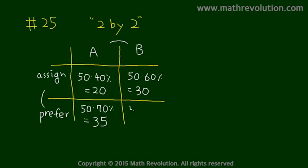And preference for team B were 50 times 30%. That is 15 people.